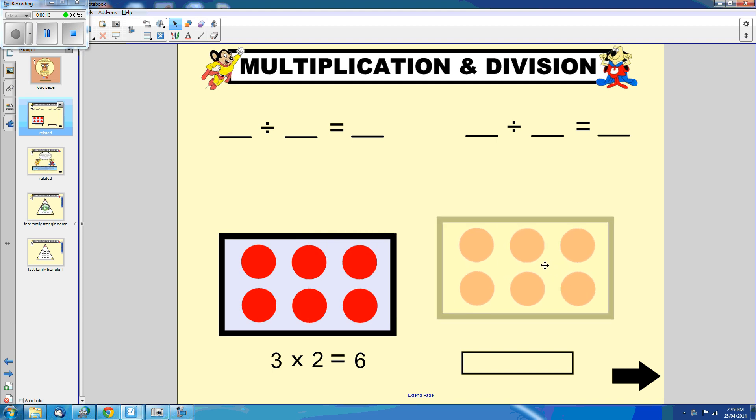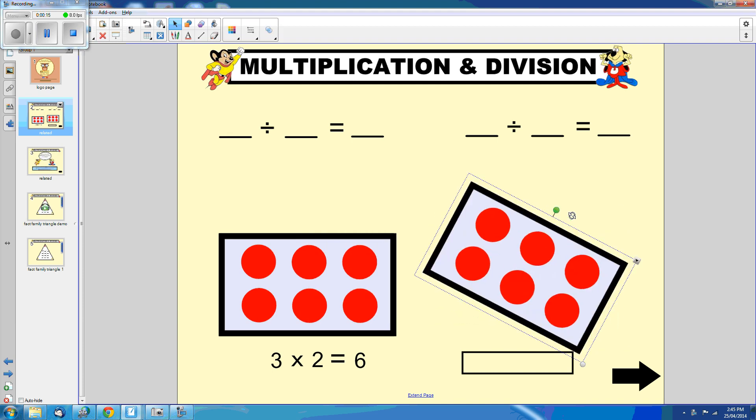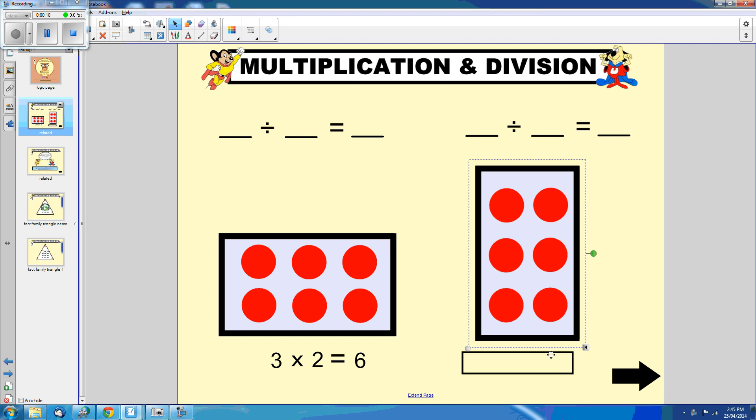If we take the same array and turn it around, we can show the turnaround fact which is 2 times 3 also equals 6.